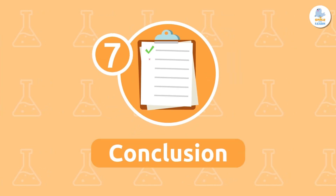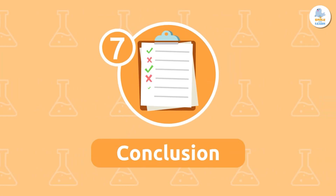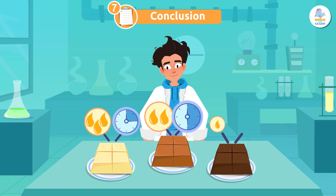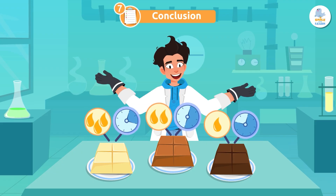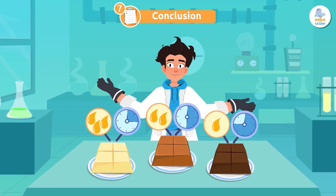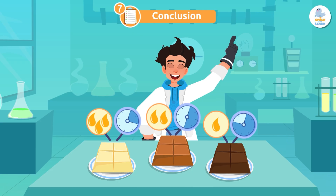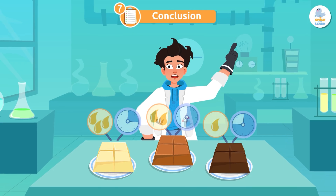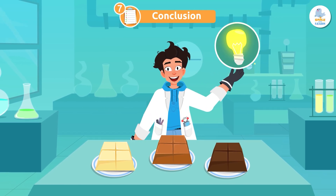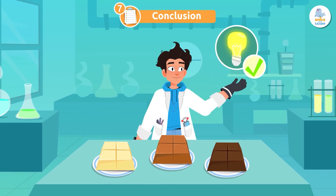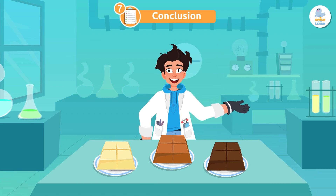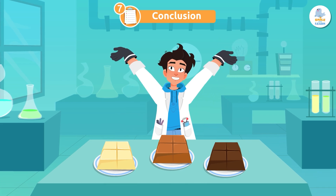Conclusion. Finally, we make a conclusion. If the white chocolate melted the fastest and we know information about its ingredients, we can say that the hypothesis was correct: white chocolate melts faster because it has more fat.